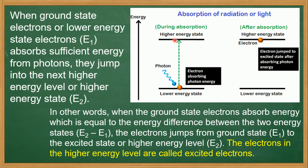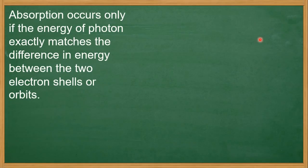This is E2 energy level. E2 minus E1 — if the energy of the photon matches, then electrons absorb it and reach the higher energy state, the excited state. This is the absorption event, because the electron has absorbed the energy of a photon. This is the excited electron, in the excited state, the higher energy state.